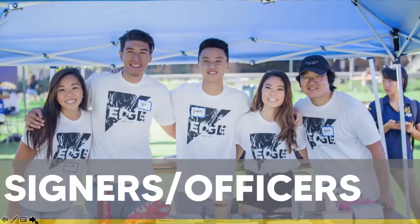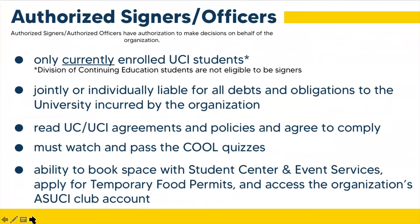Signers or officers are organization leaders responsible for all actions of the organization. We require a minimum of three officers with the option to list up to five. The president or equivalent position and the treasurer must be listed as officers. Note that the terms 'signer' and 'officer' are used interchangeably. Once an officer completes all registration requirements, they become an authorized officer. Authorized officers must be currently enrolled UCI students and are jointly or individually liable for all debts and obligations incurred by the organization. They have the ability to book space with Student Center and Event Services, apply for temporary food permits, access the organization's ASUCI club account, and more.